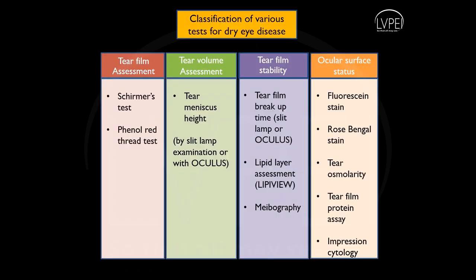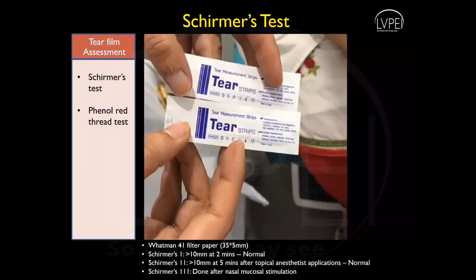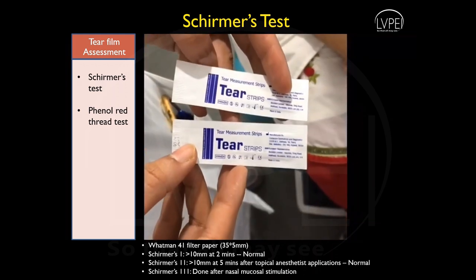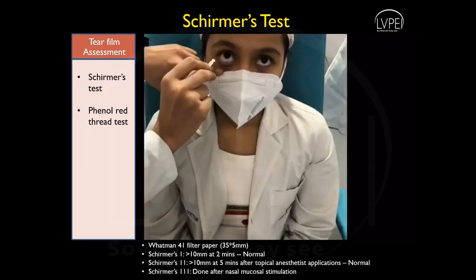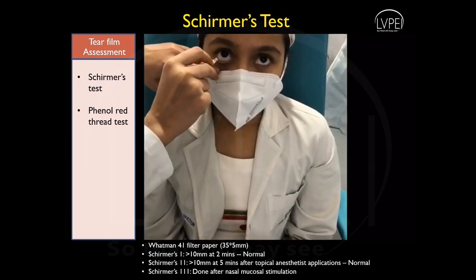Various tests for dry eye disease can be classified as assessment of tear film, assessment of tear volume, tear film stability, and assessing the status of ocular surface. Tear film assessment can be done by Schirmer's test or the phenol red test.